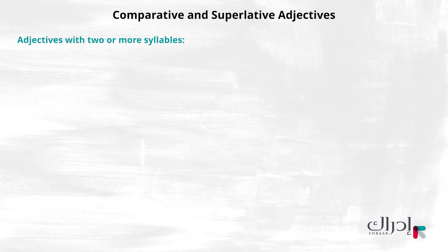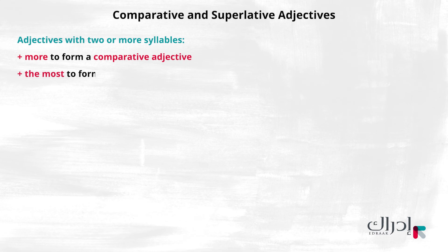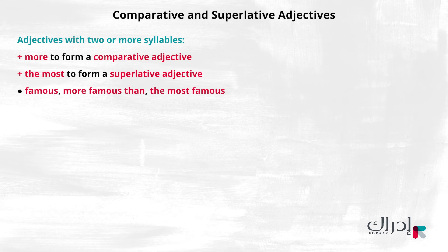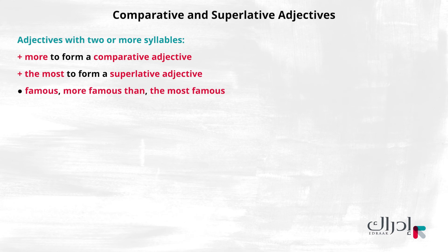Adjectives with two or more syllables use more to form a comparative adjective, and the most to form a superlative adjective. For example: famous, more famous than, the most famous. Adjectives that have irregular comparative and superlative forms: